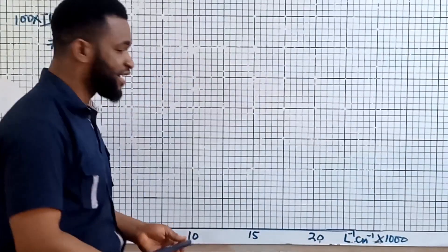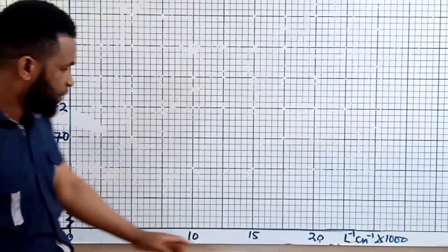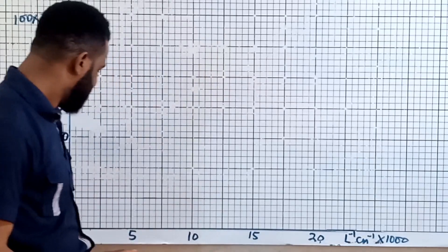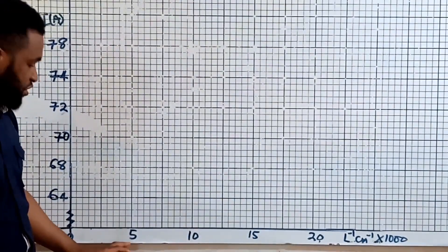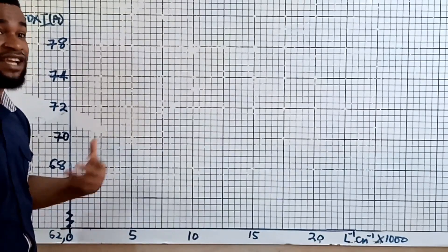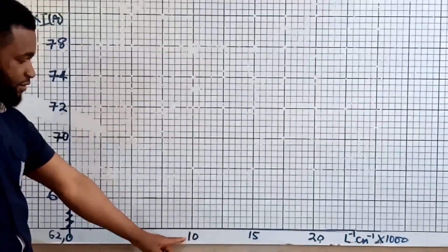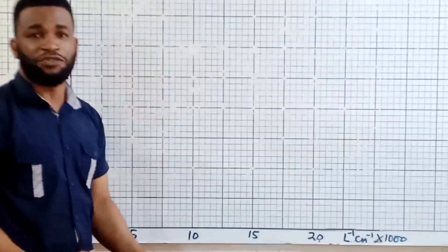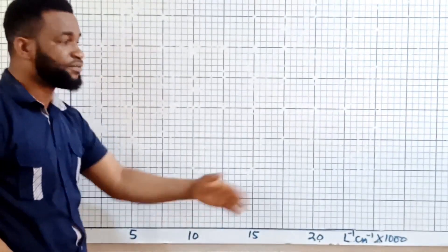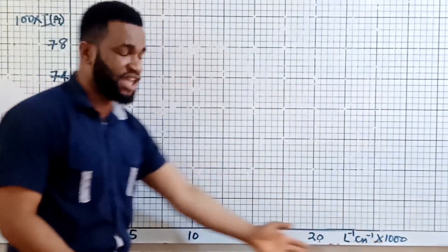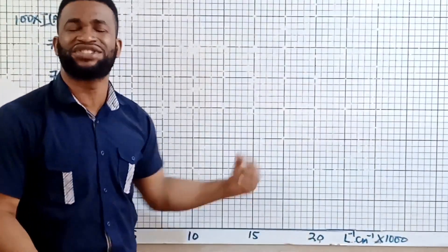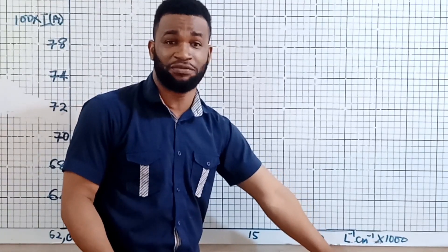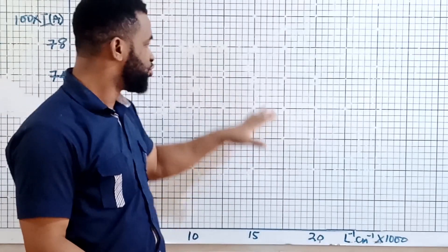Then coming to the horizontal axis also. You will see L inverse — I multiplied by 1000. For me to get 5, I multiplied something by 1000 to get 5. This is 10 — I multiplied something to get 10. So for you to go back to the original table you have to divide by 1000 to get the original value. This is a technique — just bringing a high level of technicality in handling your table of values so that it will be easy for you.